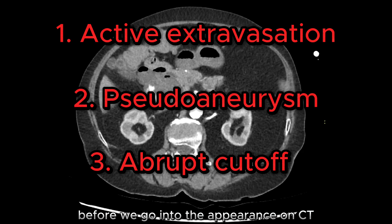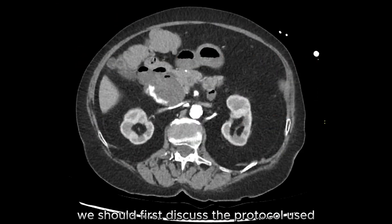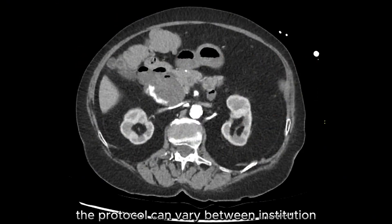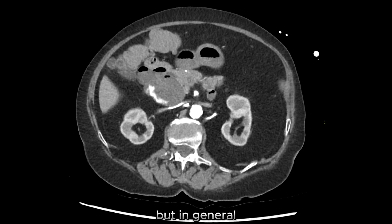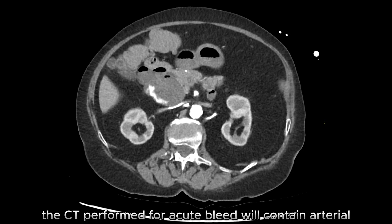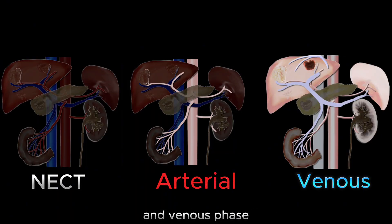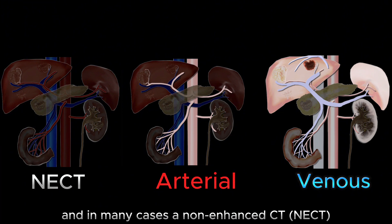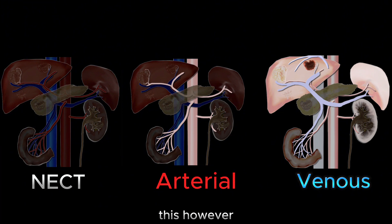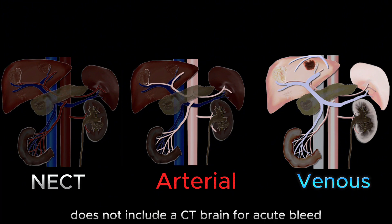Before we go into the appearance on CT, we should first discuss the protocol used. The protocol can vary between institutions, but in general, the CT performed for acute bleed will contain arterial and venous phases, and in many cases a non-enhanced CT. This however does not include a CT brain for acute bleed.